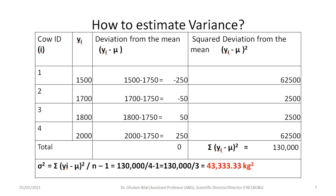We use a table to estimate variance. The first column has cow numbers 1, 2, 3, 4; the second column has their milk yields; and the third column has the deviation from the mean — that is, each milk yield minus 1750 — giving values of minus 250, minus 50, plus 50, and plus 250. These should sum to zero. The next column is the squared deviation from the mean: 250 squared, 50 squared, 50 squared, and 250 squared. The summation of (yi minus mu) squared equals 130,000. Applying the formula: sigma squared equals 130,000 divided by (4 minus 1), which equals 43,333.33 kilograms squared.